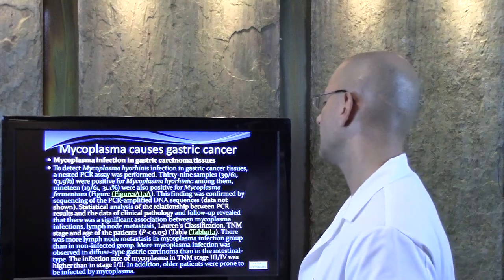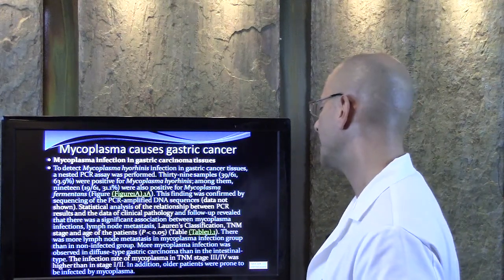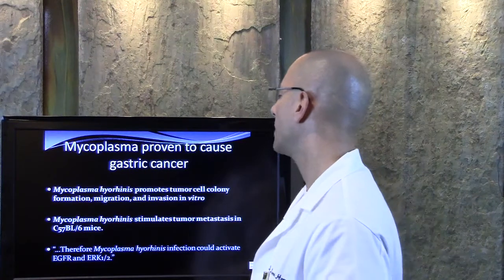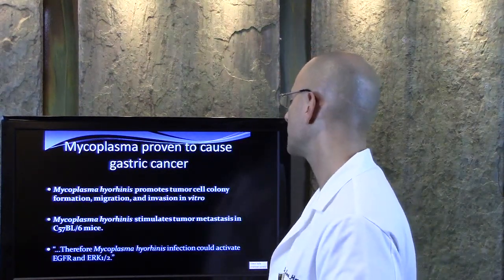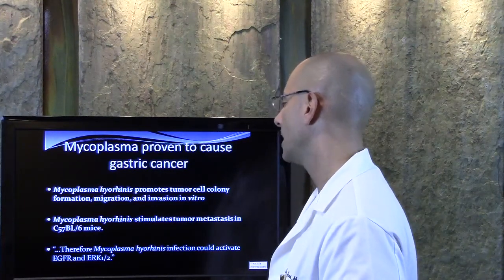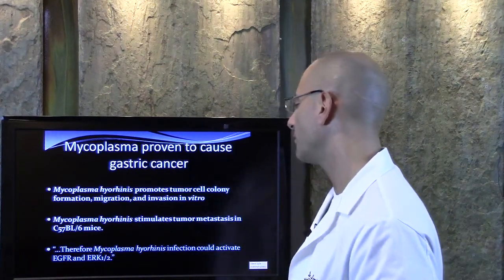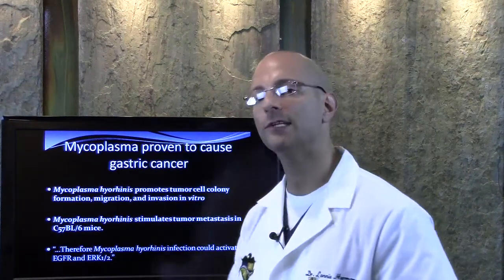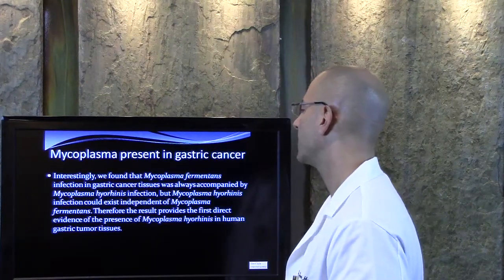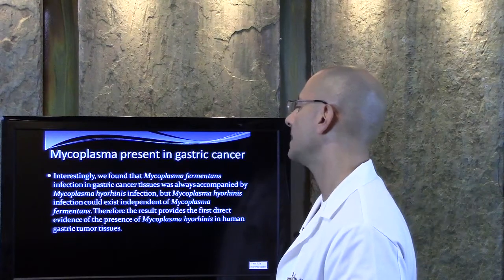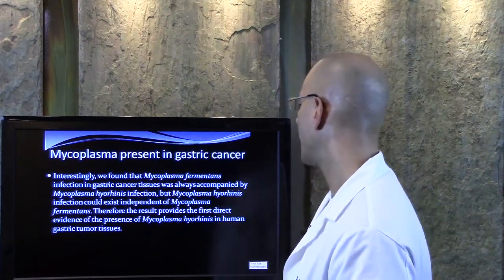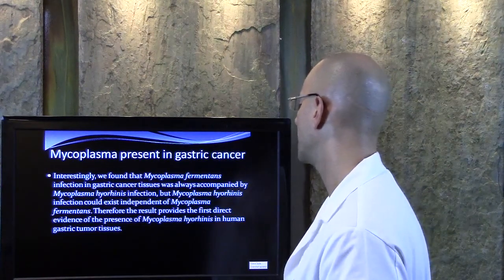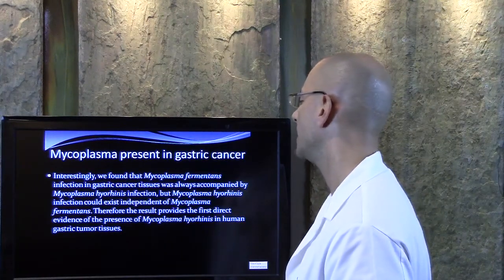More mycoplasma infection was observed in diffuse-type gastric carcinoma than in intestinal type. In addition, older patients were prone to be infected by the mycoplasma. Mycoplasma hyerhinis promotes tumor cell colony formation, migration, and invasion, and stimulates tumor metastasis in mice. Mycoplasma hyerhinis infection could activate different types of cancer-producing cells. Interestingly, mycoplasma fermentans infection in gastric cancer tissues was always accompanied by the mycoplasma hyerhinis infection, but mycoplasma hyerhinis infection could exist independent of the mycoplasma fermentans. Therefore, the results provide the first direct evidence of the presence of mycoplasma in human gastric tumor tissues.